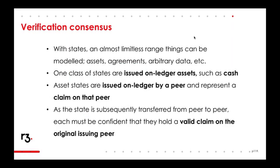There's a class of states that represent on-ledger issued assets such as cash, stocks, or bonds — states that represent a claim on a peer. If you hold a cash state on Corda, it's a claim against the cash issuer that you can redeem for actual cash. Likewise, a bond state is a claim on the issuer for the original principal investment. If you hold one of these states, you need to be confident you have a valid claim, because if you ever get into a dispute with that party and your claim is contested, you need to be able to confidently demonstrate it is valid and was originally issued by the issuer in question.